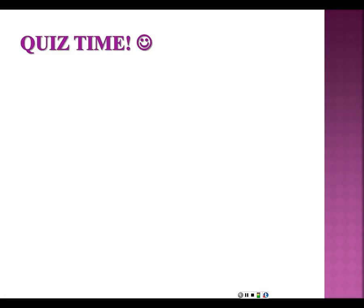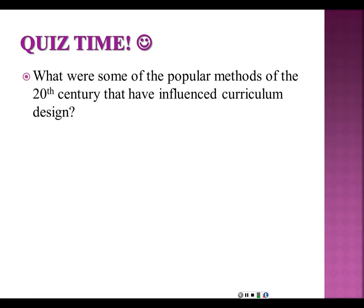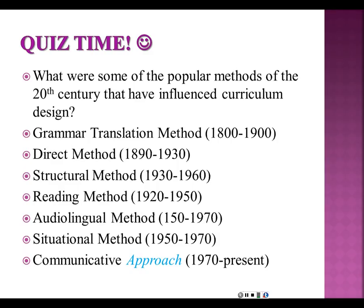What were some of the popular methods of the 20th century? This is based on Richards chapter one — a very quick review that also translates into some of the issues we are discussing in types of syllabuses. So there was the grammar translation method, the direct method, the structural method, the reading method also called the lexical approach today, the audio-lingual method, the situational method, and the communicative approach. This has a little backdrop and we will revisit some of this later.